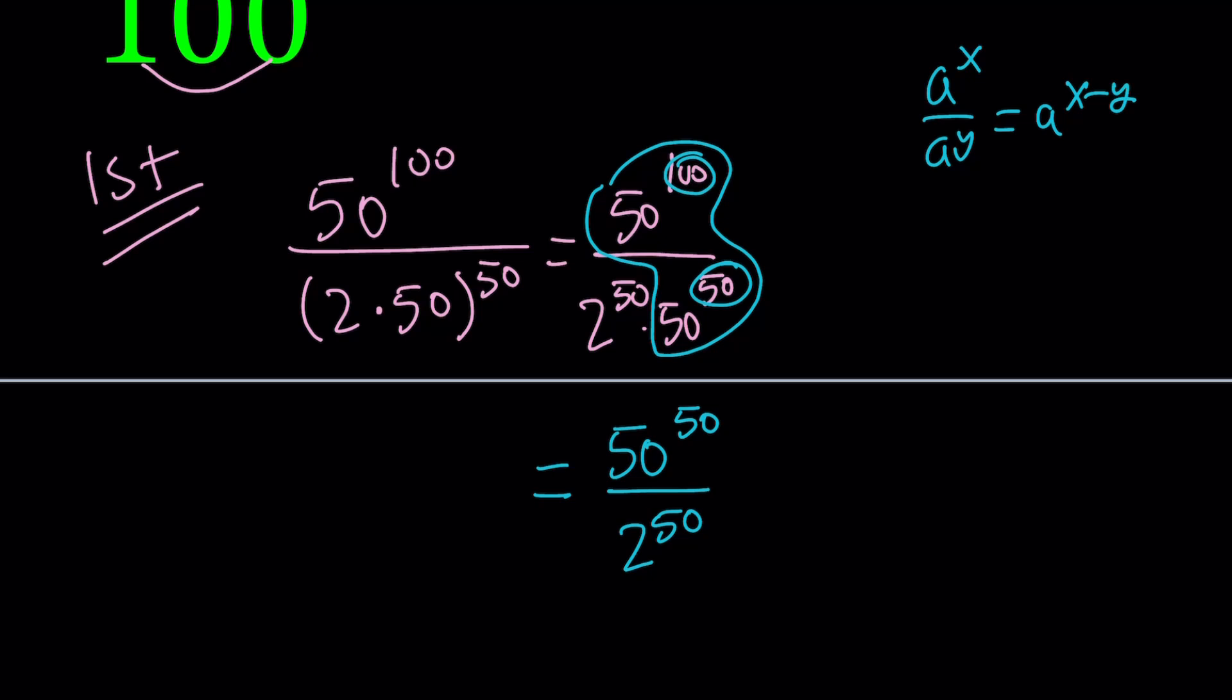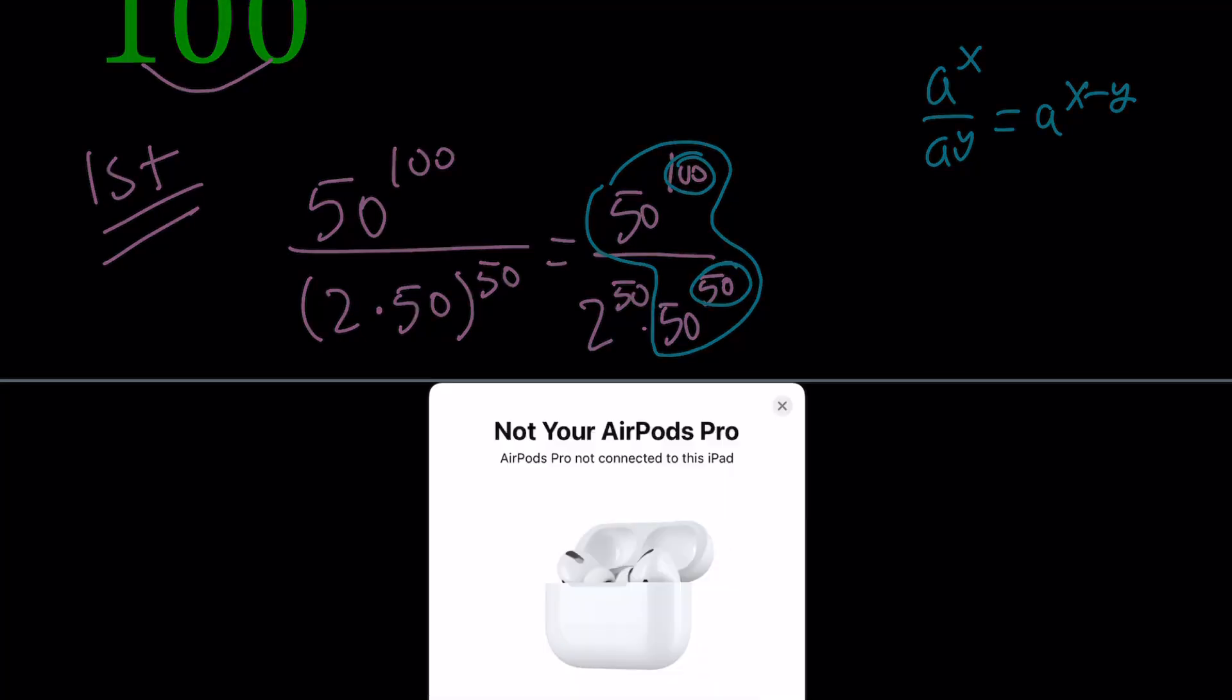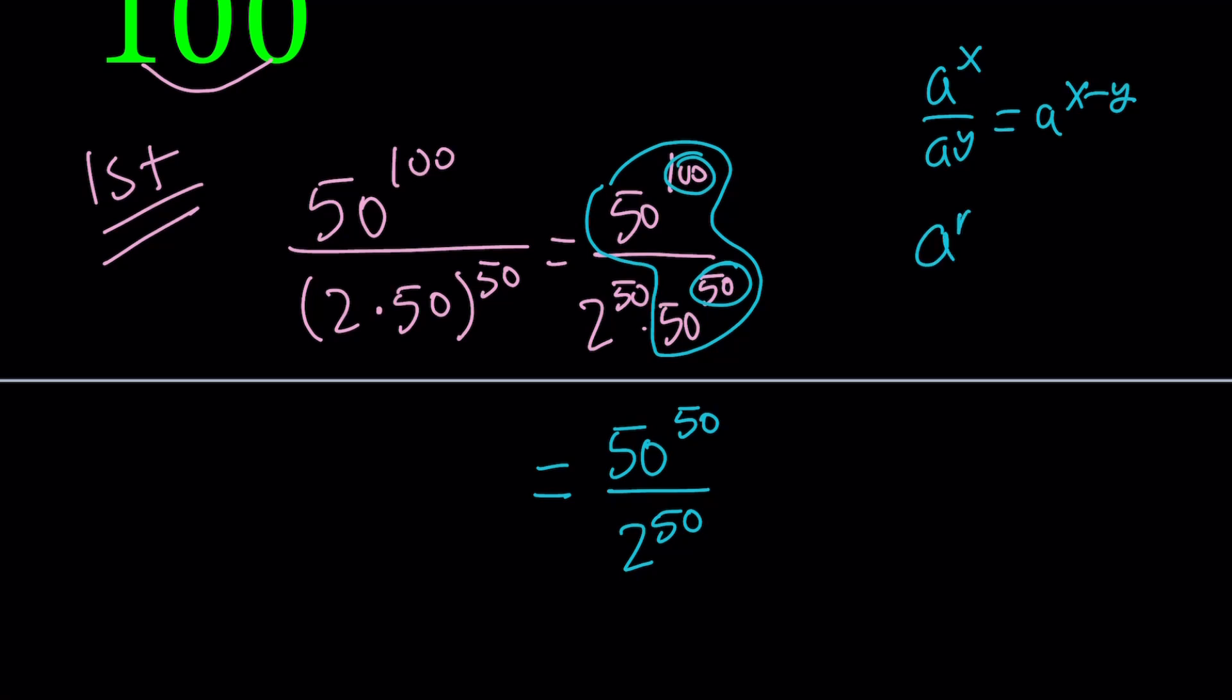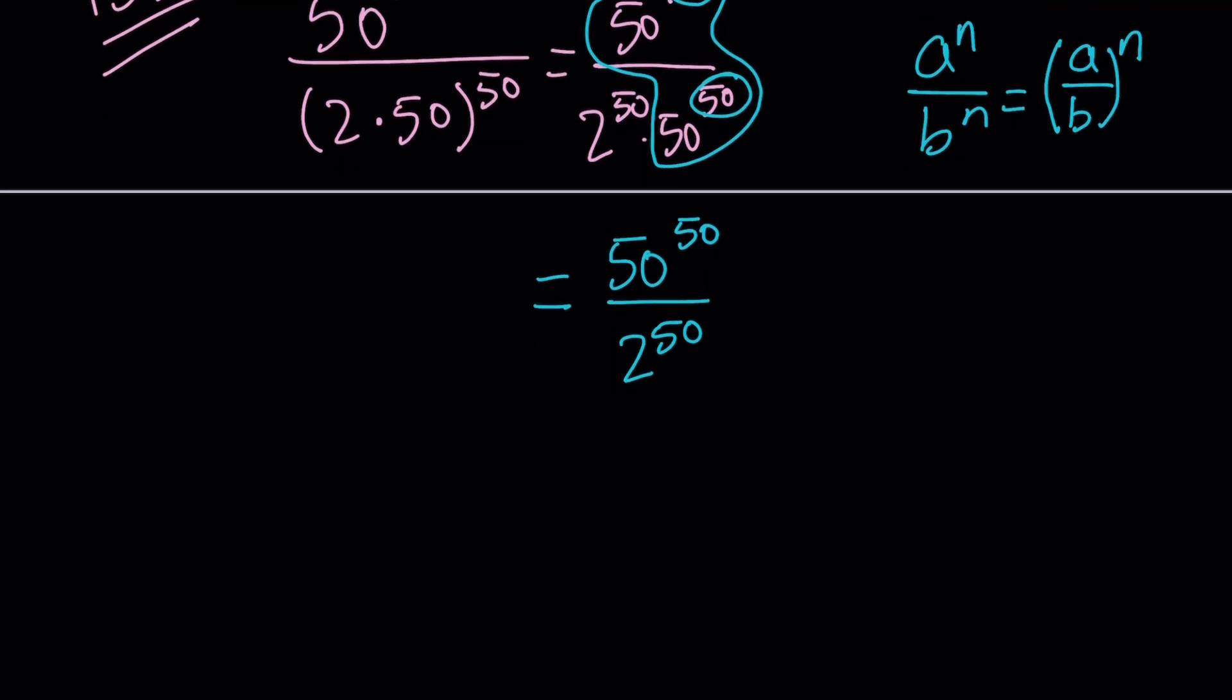This is what I like about these problems, that every time you apply a property, another property pops up and you have to use it. So it's a nice way to practice these properties of exponents. Now, what is that next property? We have the same exponents, different bases. We have something like a to the n divided by b to the n. You can write this as a over b to the power n. So use a common exponent.